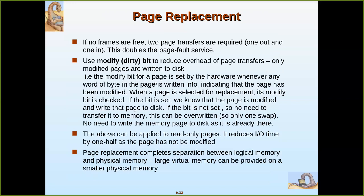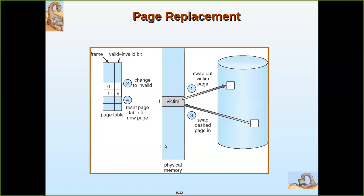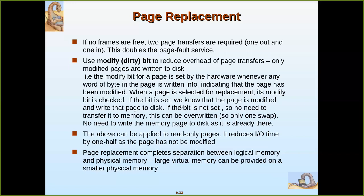If the modify bit for a page is set by the hardware whenever any word or byte in the page is written into, it indicates that the page has been modified. If there is any change in the page, the dirty bit is set. When the page is selected for replacement, the modify bit is checked. If the bit is set, we know the page is modified after it was loaded into main memory, and we must copy the whole page into secondary storage in order to carry over the change.